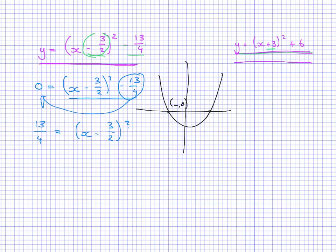Then you would undo the square, which is square root, so you would have root 13 over root 4 equals x minus 3 over 2. The brackets can actually go at this point because we don't need them anymore, so we'll get rid of them.